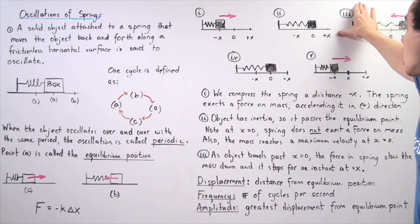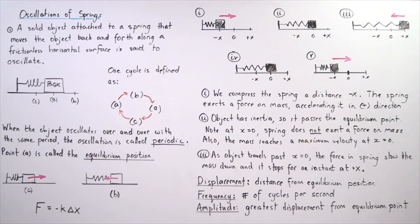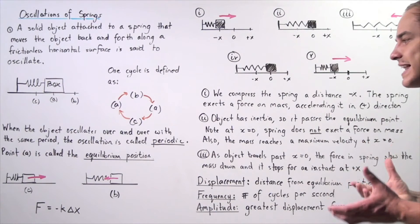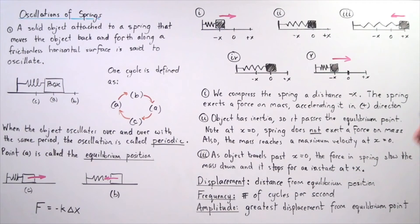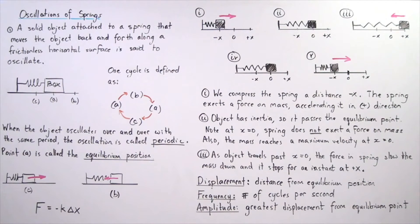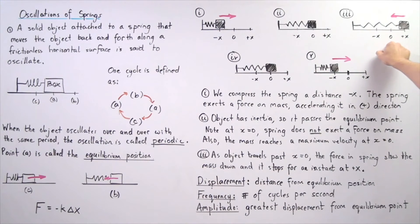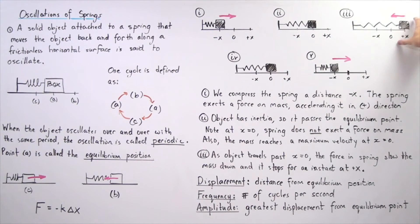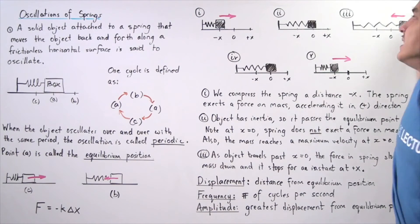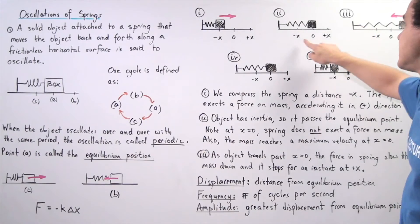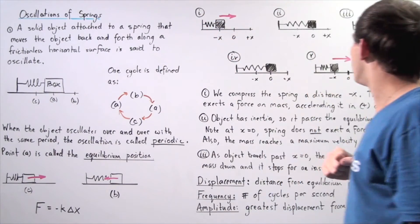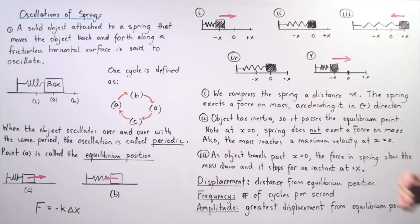At position three, as the object travels from x equals zero toward positive x, the spring creates a force pointing in the opposite direction. That restoring force slows the object down. When the object reaches a displacement of positive x from the equilibrium position, its velocity is zero — it momentarily stops and then accelerates in the opposite direction. It then moves back through position two and finally returns to position one, as shown in positions four and five.